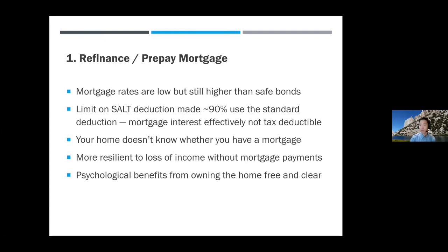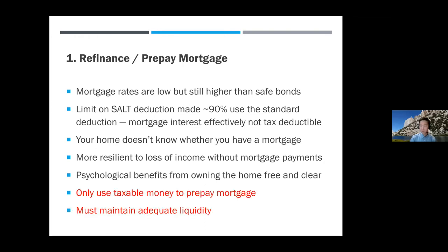You get more resilience when you don't have a mortgage — your required monthly payments are lower. If you have any loss of income or are considering retiring, you don't have a high monthly payment to make. People feel good about owning their home free and clear. The downside is you can only use taxable money to prepay the mortgage. If you have to take money from a traditional IRA, you'd pay taxes — not worth it. If you use Roth IRA money, you're using tax-free compounding to pay off a mortgage — also not worth it. Make sure you still have liquidity for emergencies.